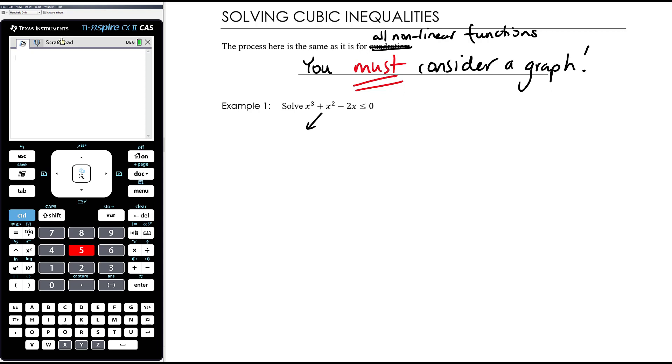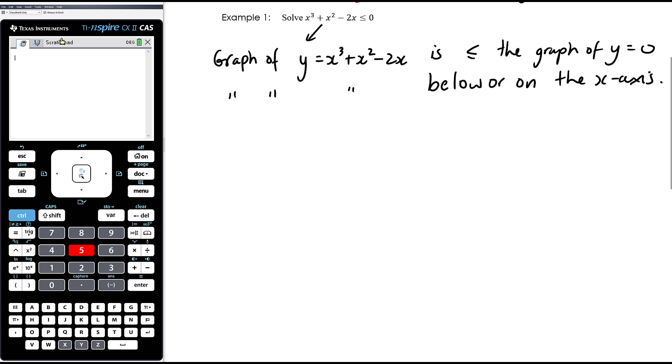So it is where the graph of y equals x cubed plus x squared minus 2x is less than or equal to the graph of y equals 0. Now, hint, the graph of y equals 0 is the x-axis. So if it has to be less than the graph of y equals 0, that means you need the graph of this to be below or on the x-axis. So we just have to draw the graph so we can see where it is below or on the x-axis.